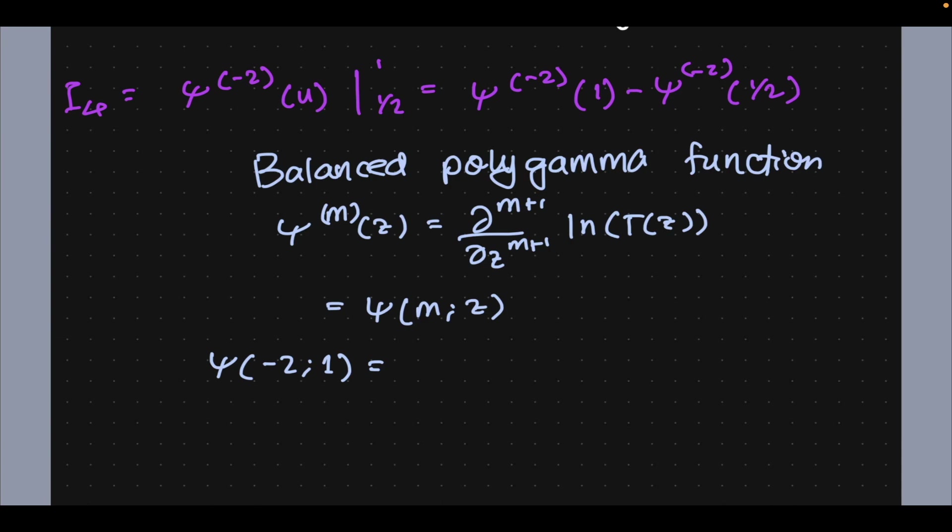So we can make note of some particular values that we should be concerned with for this question. This will be 1/2 natural log of 2π. Balanced polygamma of -2 at 1/2 is going to be quite a long thing: 1/4 natural log of π plus 3/2 natural log of the Glaisher-Kinkelin constant.